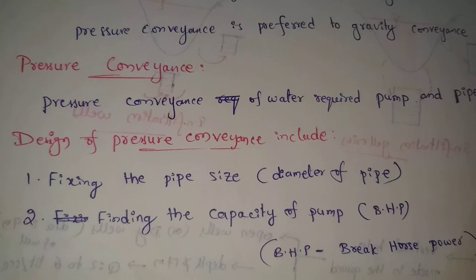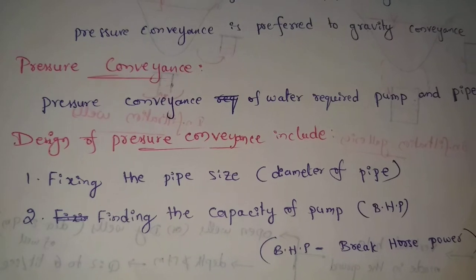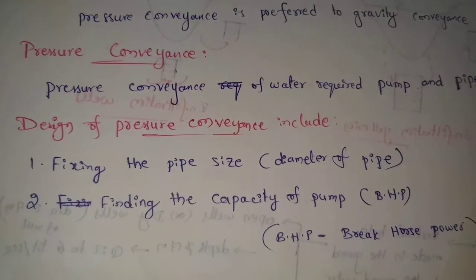In pressure conveyance design, everything depends on the pipe diameter. We will fix the pipe size and find the capacity of the pump. The pump capacity is based on elevations.